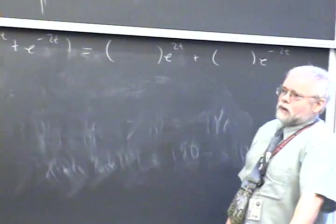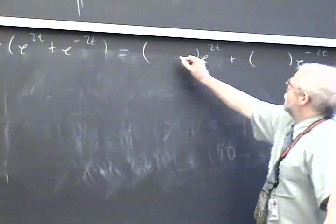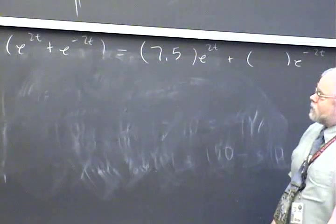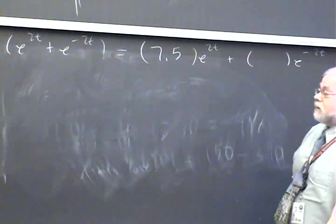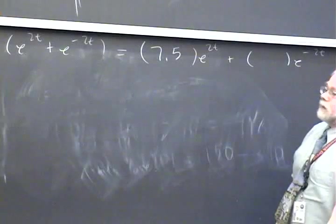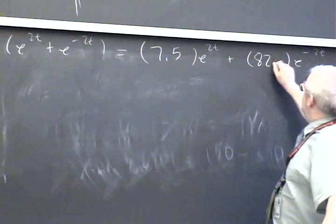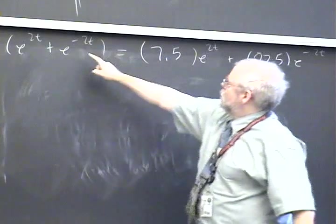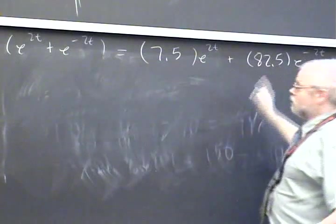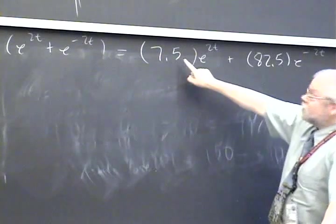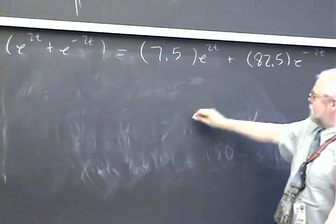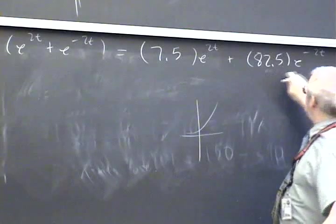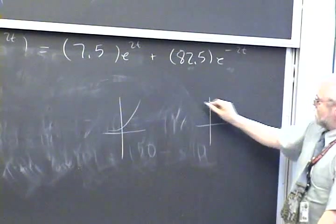It's easier to deal with exponentials than cosh and sinh, so let's translate that function into exponentials. We've got -75/2 times (e^(2t) - e^(-2t))/2 upfront, and then for the cosh we've got 45(e^(2t) + e^(-2t))/2. Now we've got something times e^(2t) and something times e^(-2t). For e^(2t): 45 - 37.5 = 7.5, and 45 + 37.5 = 82.5.